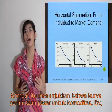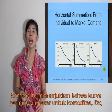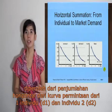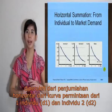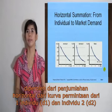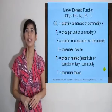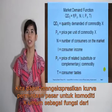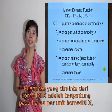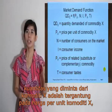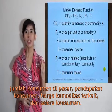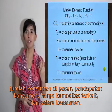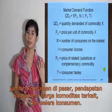The market demand curve for commodity DX is obtained from the horizontal summation of the demand curves of individual consumers. We can express the general market demand function for commodity X as a function of: quantity demanded of commodity X, price of commodity X, number of consumers in the market, consumer income, price of related commodities, and consumer tastes.